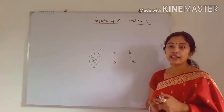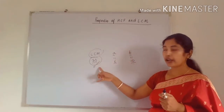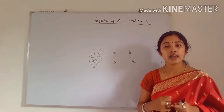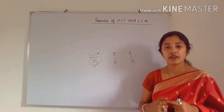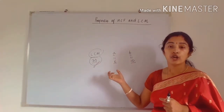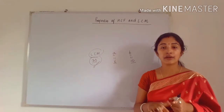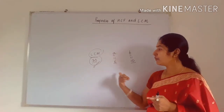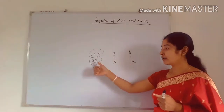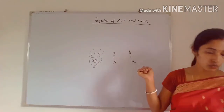This first and second property you will encounter again in class 10. So remember: in HCF, the result is the smallest among the three; in LCM, the result is the greatest among the three. These are the two properties.